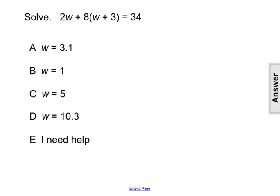Solve the equation 2w plus 8 times the quantity w plus 3 equals 34. When asked to solve an equation, the goal is to get the variable completely isolated or alone on one side of the equal sign.